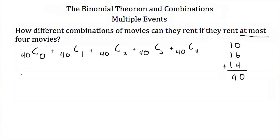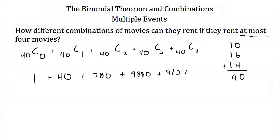There's only one way to choose zero movies out of 40. There are 40 different ways to choose one movie out of 40. Calculating the rest: there are 780 ways to choose 2, there are 9,880 ways to choose 3, and there are 91,390 ways to choose 4 movies out of 40. Adding all these up, there are 102,091 different possible combinations they can rent at most four movies.